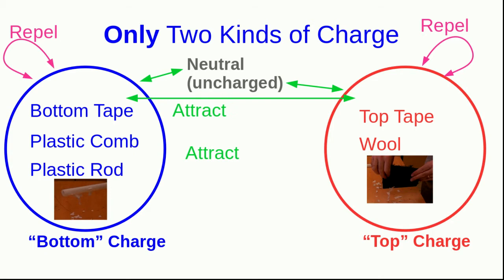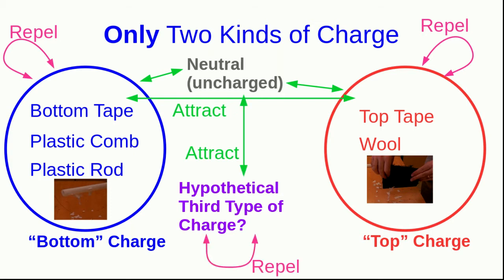But what if there were a third kind of charge? Could there be a third kind of charge? Well what would it look like? Well it would be a charge and so by definition it would have an attractive interaction with neutral things, and something carrying this hypothetical third type of charge would have to repel other things with this third type of charge. But, and here's the key thing, it would have to be attracted to all different kinds of charge and so it would be attracted to both bottom charge and top charge.